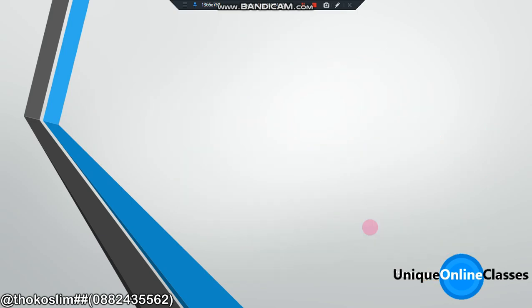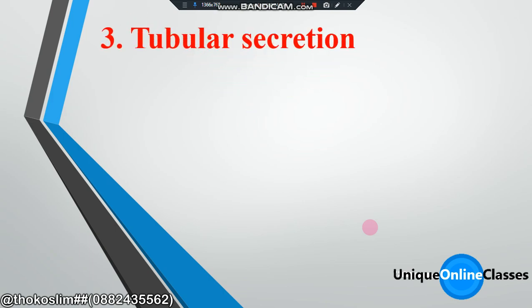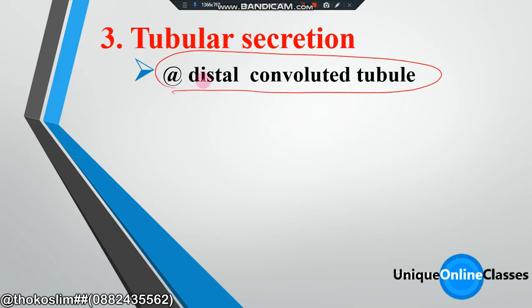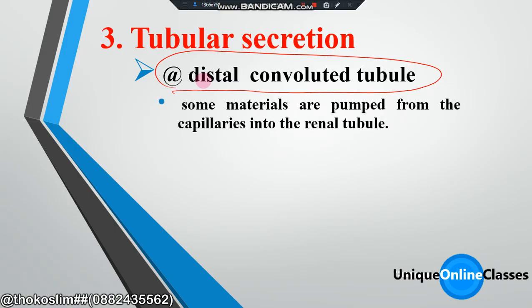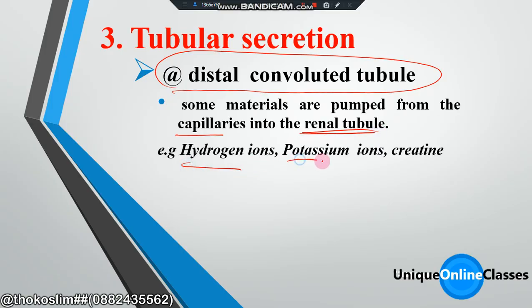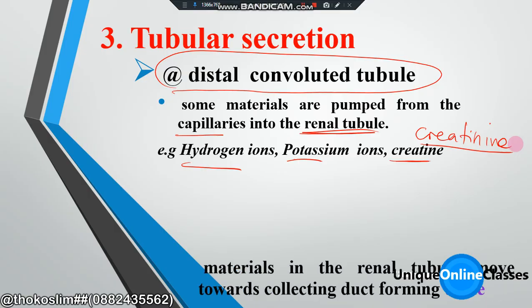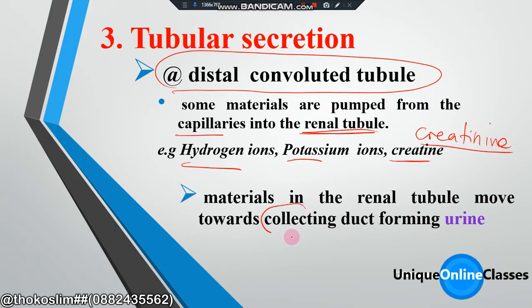We have another process called tubular secretion. In the distal convoluted tubule, some materials are pumped from the capillaries into the tubule. Those substances include hydrogen ions, potassium ions, and creatinine.